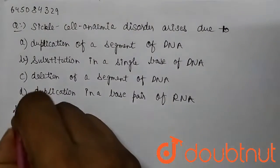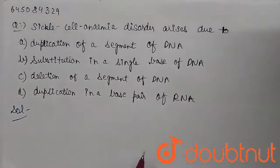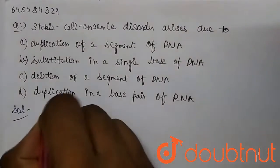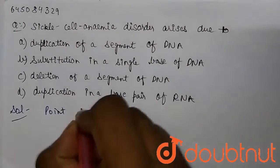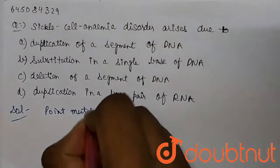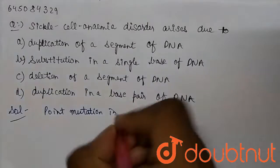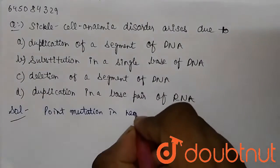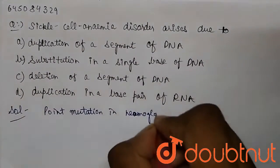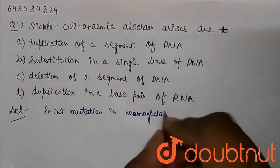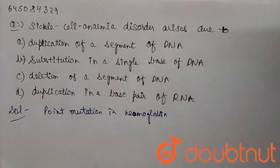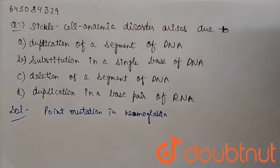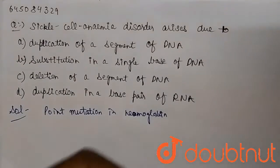Here we are talking about sickle cell anemia. This disorder is basically arising due to a point mutation — a point mutation in the hemoglobin gene. This point mutation occurs in the hemoglobin, and that's why sickle cell anemia arises, which is a respiratory disorder.